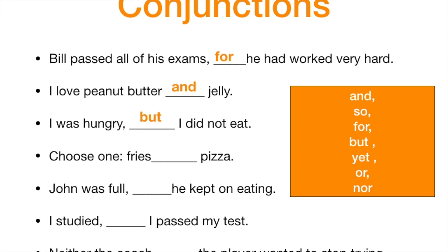If you were hungry, you should eat — but the opposite thing happens. So we put 'but' here to show the contrast between these parts of the sentence. Conjunctions connect words and show relationships like contrast, like addition, like cause and effect. Choose one: fries or pizza. This shows one or the other — an alternative.